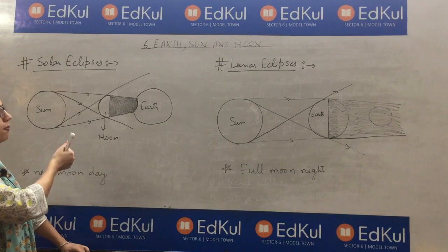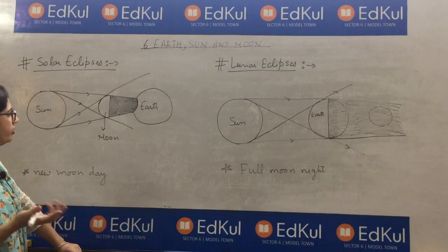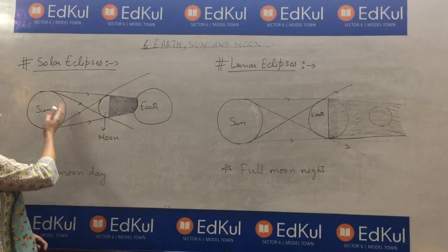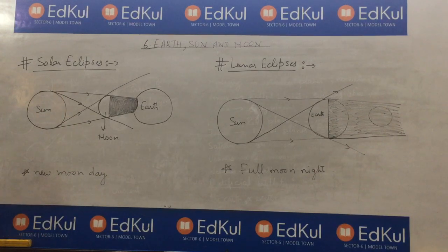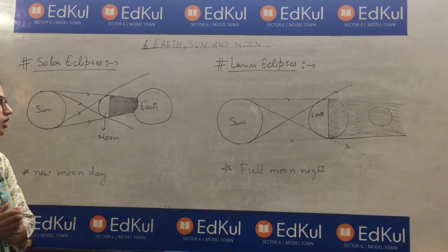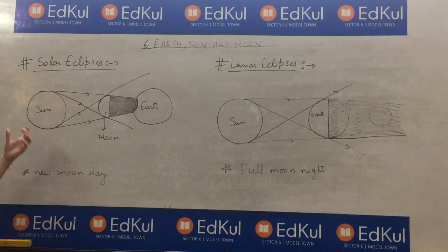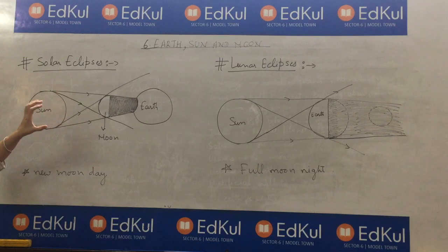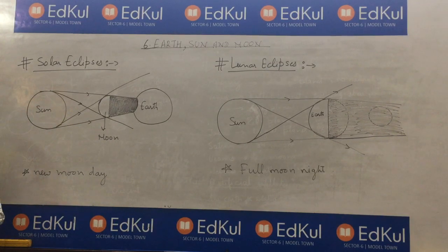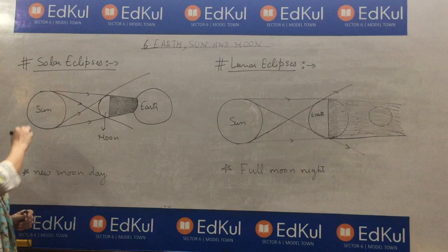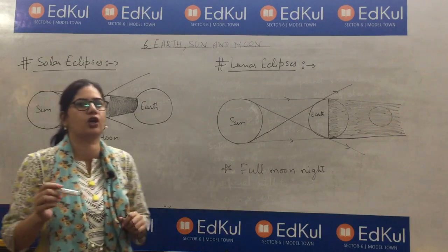Solar eclipse can be partial or full. In a partial solar eclipse, the moon covers the sun only partially, so we can see some part of the sun. But if the moon covers the entire sun, then it is known as a complete solar eclipse. The bright ring of light that appears around the sun during a total eclipse is known as corona.